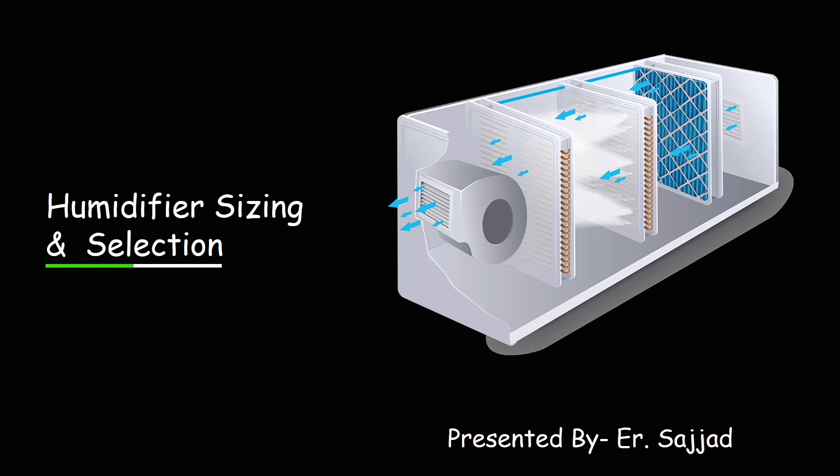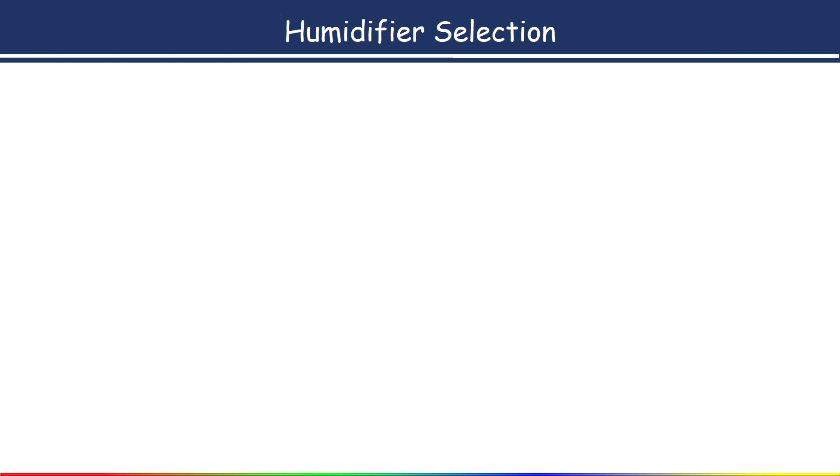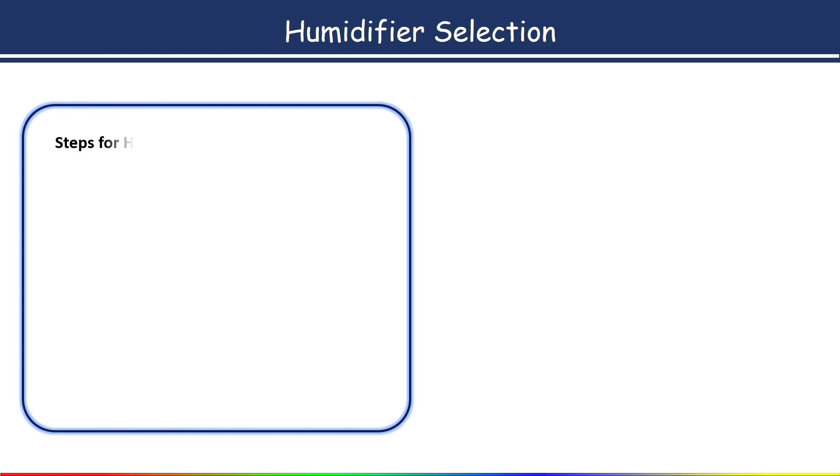Maintaining optimal humidity levels, usually between 30 to 50 percent, is essential for comfort, health, and even the preservation of certain materials and equipment. Here we'll discuss the humidifier selection. First I will show you the steps we have to follow for sizing or selecting a humidifier, and after that we'll show you an example calculation.